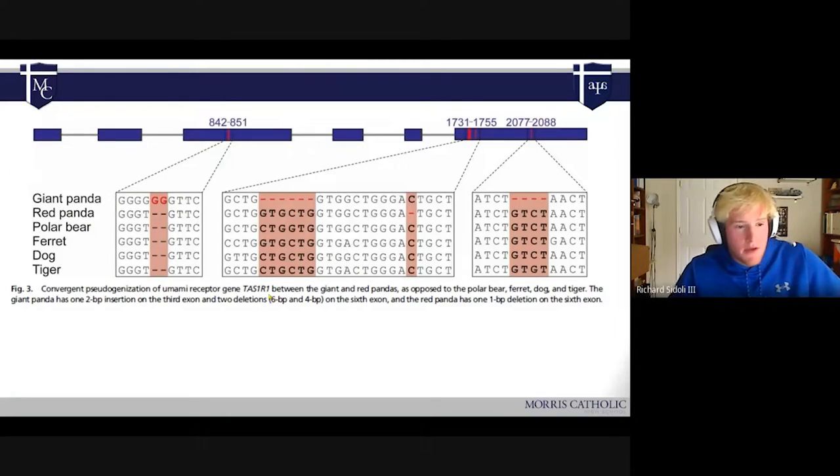The last specific, the last change or convergent evolution that we see is in the umami taste receptors. Umami is a flavor that is found commonly in meat. So like a carnivore, for example, a normal carnivore that is actually eating meat, they experience the umami taste when they're eating meat. Since both pandas, while still being carnivores are on a completely herbivorous diet, they're not actually using that taste receptor.